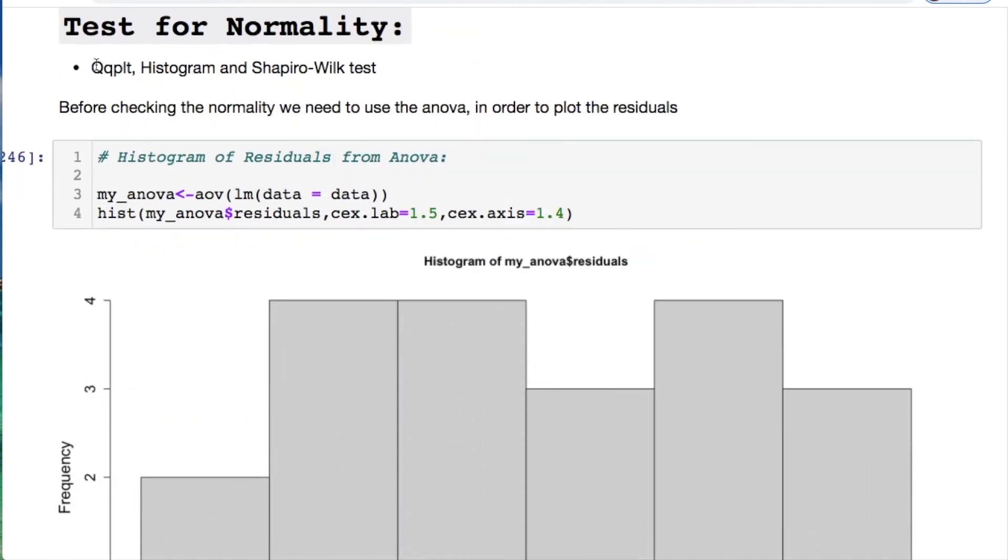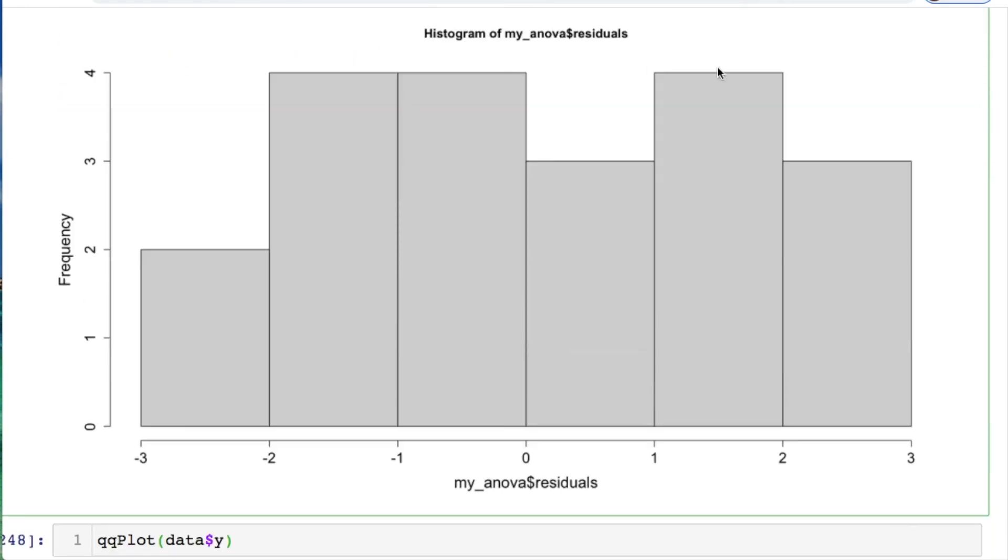First thing we're doing is normality test. You could do a QQ plot, histogram, or the Shapiro-Wilk test. I'm going to show you all three. Run through the ANOVA. Remember your linear model here and then throw it into a histogram. But remember you're doing this AOV first in order to do a histogram of your residuals. All of these tests right here are with respect to the residuals. That's why we have to do the ANOVA first. These samples don't look like they're normally distributed. Consider doing transformations to your data.